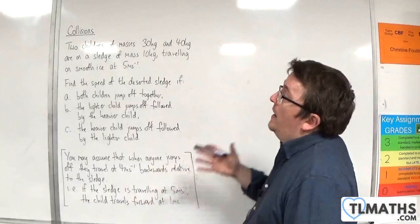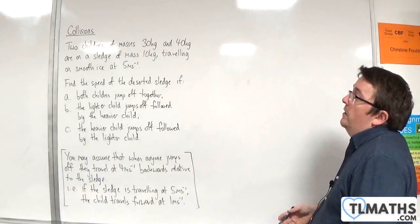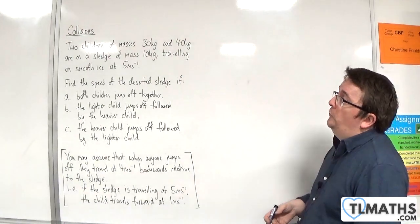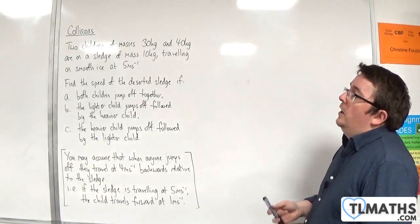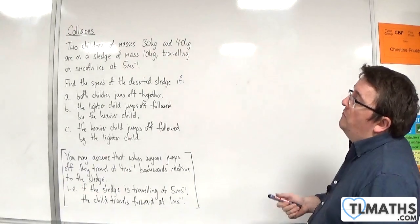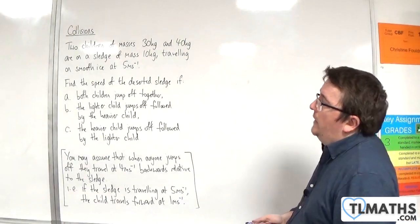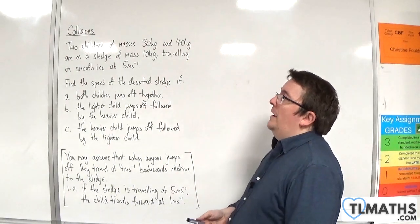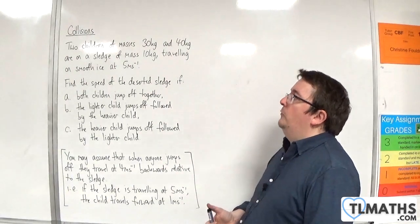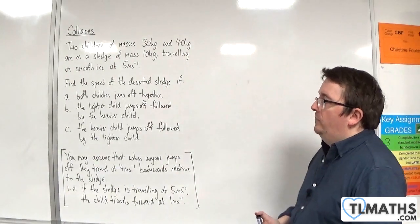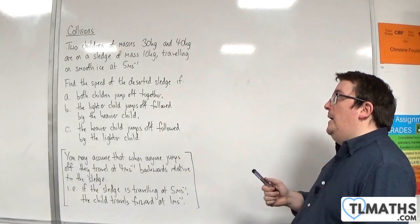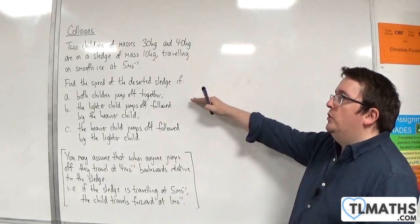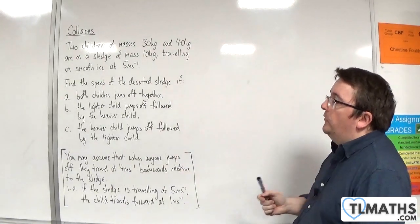In this problem, we have two children of masses 30 kilos and 40 kilos on a sledge of mass 10 kilos, travelling on smooth ice at 5 metres per second. We need to find the speed of the deserted sledge in each of these scenarios.